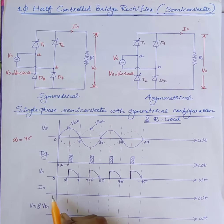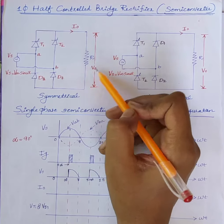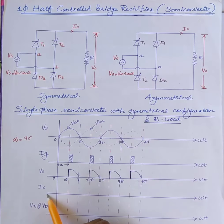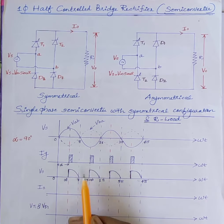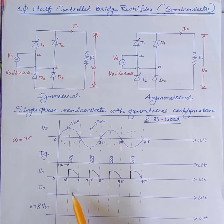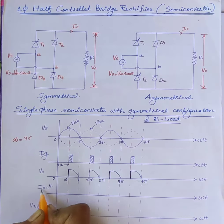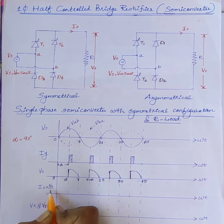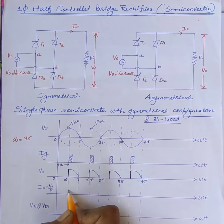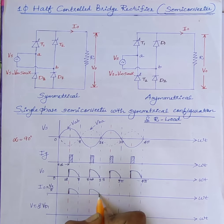Next is load current I0. Here we are using a resistive load, so I0 and V0 are in phase. The shape of I0 is the same as that of V0 with reduced magnitude, because I0 is equal to V0 divided by R.